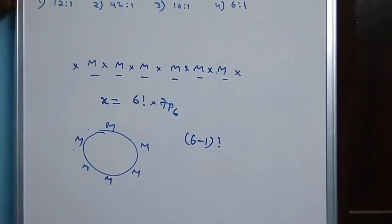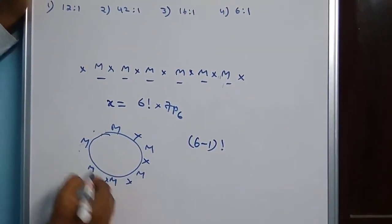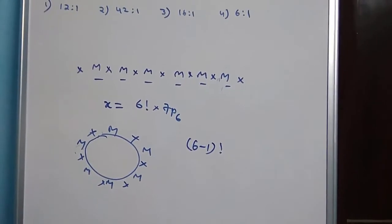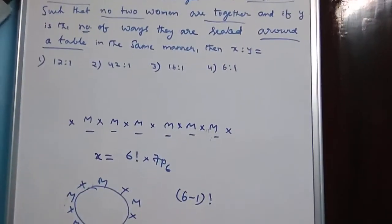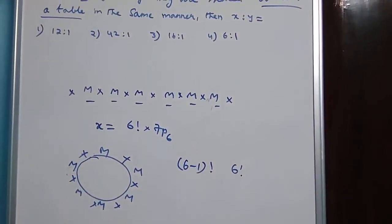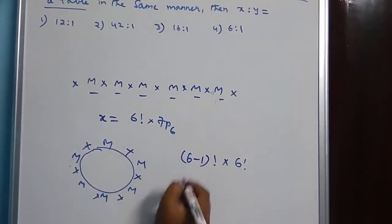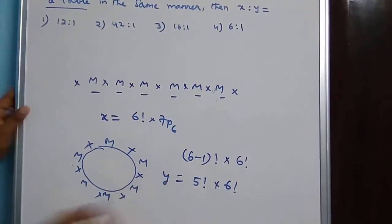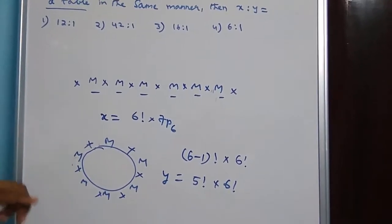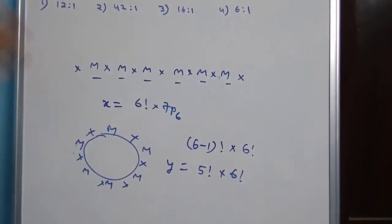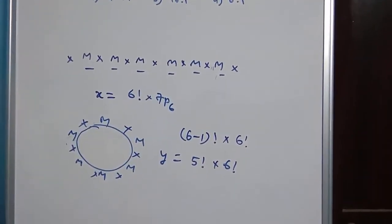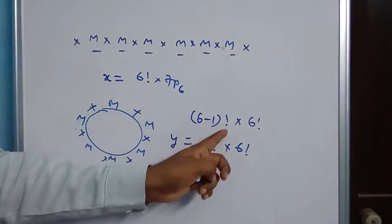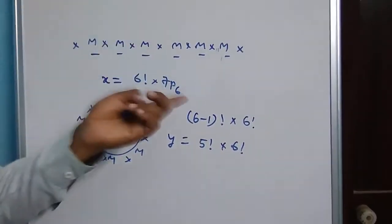So 6 minus 1 factorial. Now there are gaps: 1, 2, 3, 4, 5, 6 — how many gaps are there? There are 6 gaps. These 6 gaps will be filled with 6 women. There are 6 women and 6 gaps, so they can be arranged in 6 factorial ways. The required permutation is 6 minus 1 factorial into 6 factorial, that is 5 factorial into 6 factorial. This is Y.